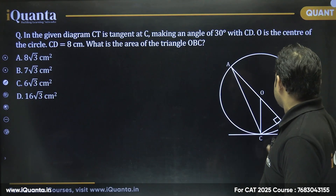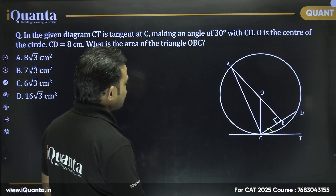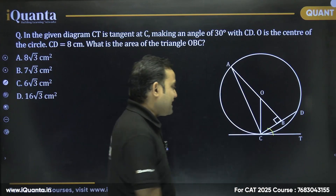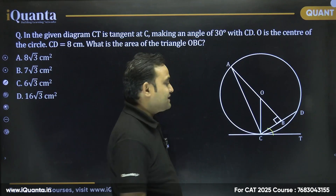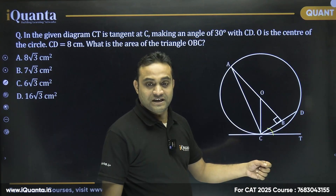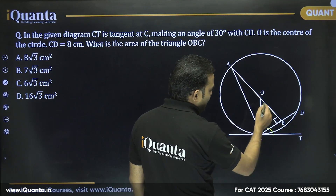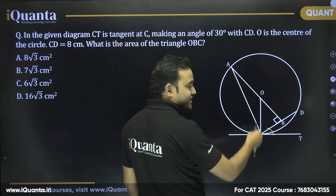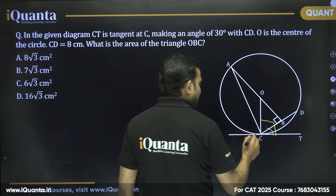The next question says: CT is the tangent at C making an angle of 30° with chord CD. O is the center of the circle, CD = 8. Find the area of triangle OBC. Since the radius OC is always perpendicular to the tangent, angle OCT = 90°. Therefore angle OCB = 90° − 30° = 60°.